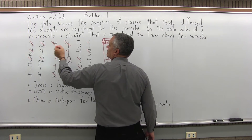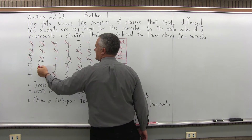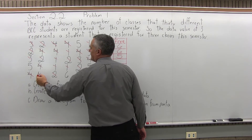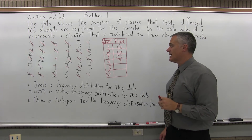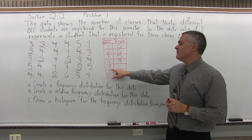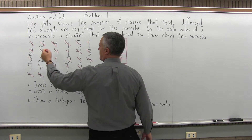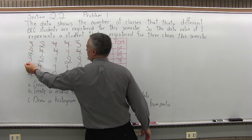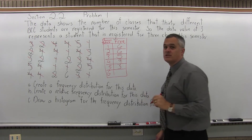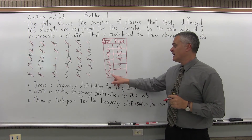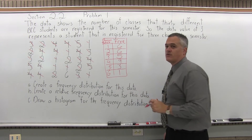For 4 classes: 1, 2, 3, 4, 5, 6, 7, 8, 9. There were 9 students registered for 4 classes. How many students registered for 5 classes in one semester? 1, 2, 3. There were 3 students that registered for 5 classes in a single semester. And there was only 1 student registered for 6 classes.